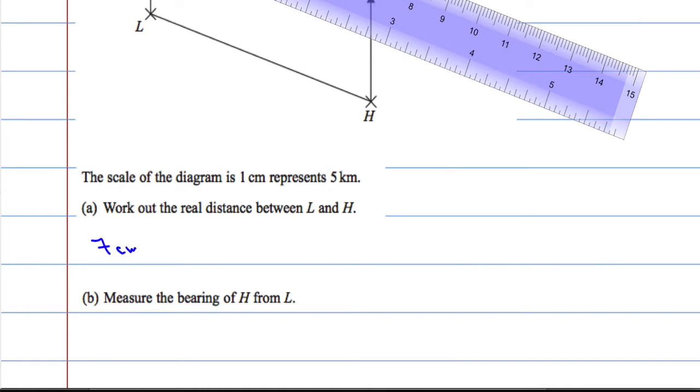7cm. And 7cm implies 35km. For every centimetre we go 5km.